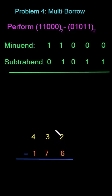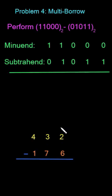Subtraction is always performed column-wise. That is why I have to subtract 6 from 2, which is impossible. So I have to go to the next column and take one borrow. When I borrow one from the next column to the current column in base-10, it is equal to 10. So 10 plus 2 will give us 12, and now I have 12 minus 6, which gives me 6.